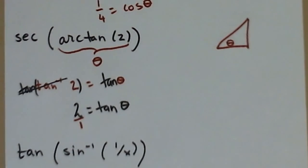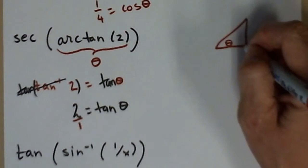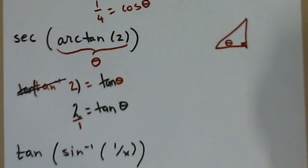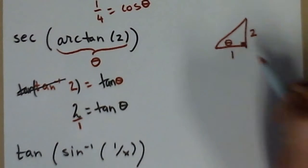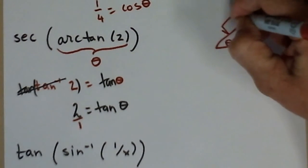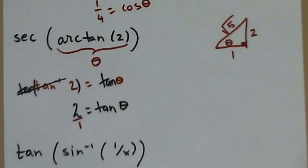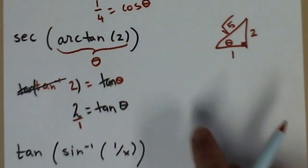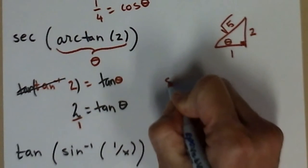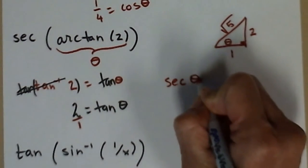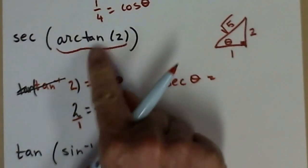You can make that two over one if it makes it easier to label your sides. Here's my right angle. Tangent is opposite over adjacent. Pythagorean theorem gives you the missing side in case we need it. Now I'm ready to go back and answer the question. I have the secant of theta, arctangent of two, also known as theta.